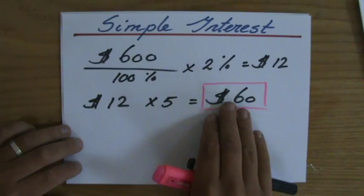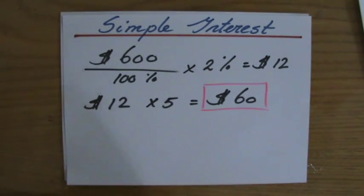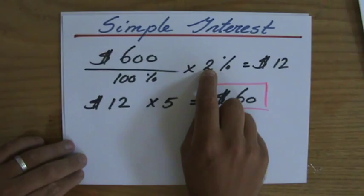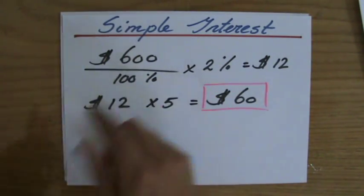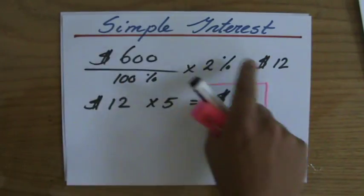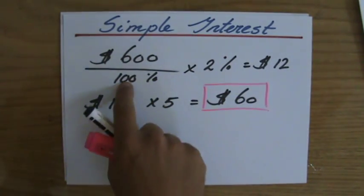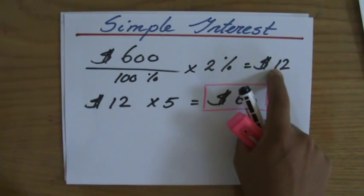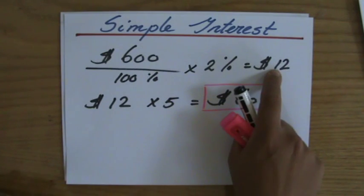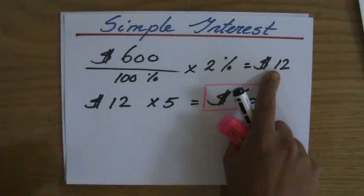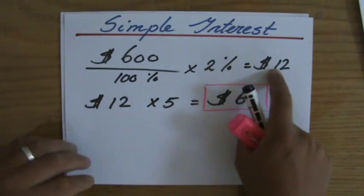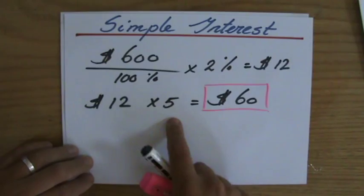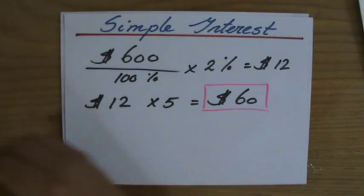But considering the question is how much interest will John receive, sixty dollars is the final answer. So with simple interest at two percent per year: two percent of six hundred is twelve dollars every year. After one year: twelve dollars; after two years: twenty-four dollars; after three years: thirty-six dollars; and after five years: twelve times five equals sixty dollars.